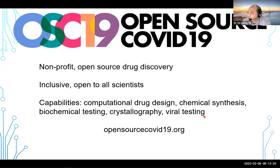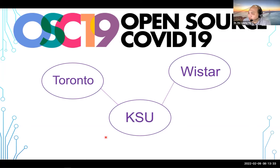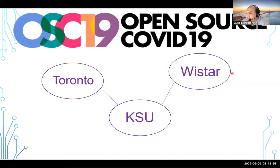We had computational drug design, chemical synthesis, biochemical testing, crystallography, and live viral testing. The heart of our consortium were my lab and other labs at Kansas, the University of Toronto which led the machine learning aspects, and the Worcester Institute in Philadelphia which did the biochemistry work. This was at the early time of the pandemic when labs were pretty much shut down all around the world. Worcester was given permission as a well-established antivirus research lab to continue operating, whereas the rest of us could do only computer work.